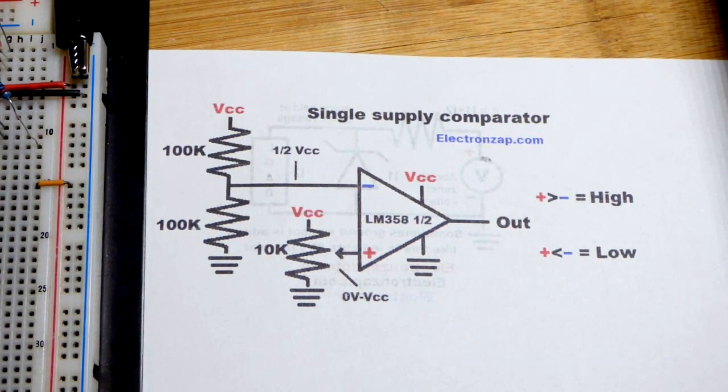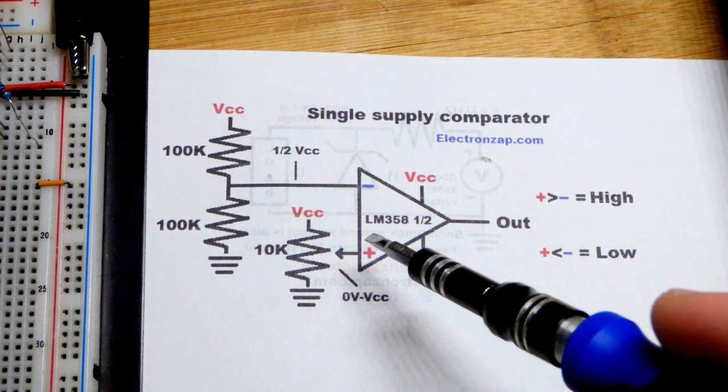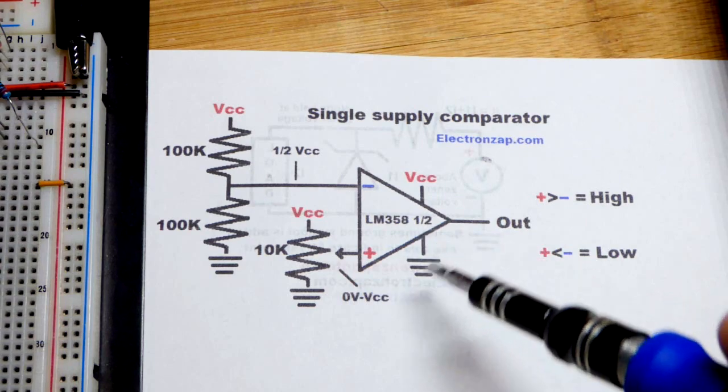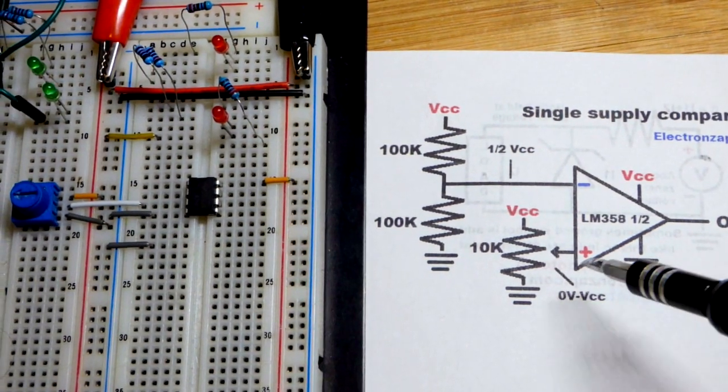So in any case, they work about the same though once you get the right pins. Now, we're using the LM358. It's one out of two. There were two of them on there. So we're just going to set the voltages with voltage dividers. Pretty straightforward.